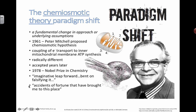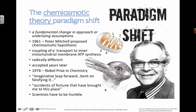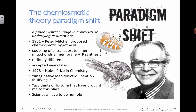Mitchell was also very humble, saying that accidents of fortune have brought me to this place. By going out on a limb, he could have been wrong — there was just as high a chance of him being wrong — but he decided to present his ideas anyway. All the other scientists, also very smart people, had to go through the process of really testing these theories to make sure they could stick. So that's an example of a paradigm shift in science. You could write about this for some of your TOK essays, bringing in other examples as well.